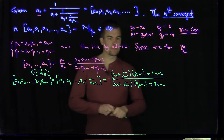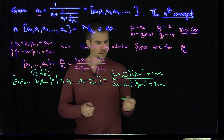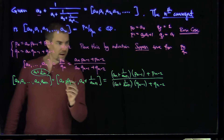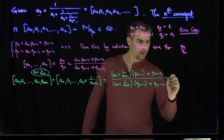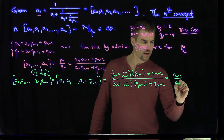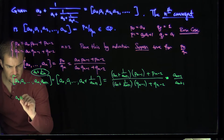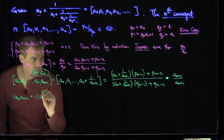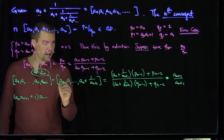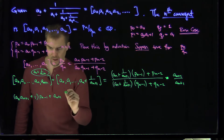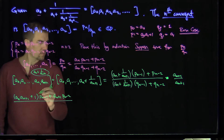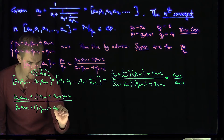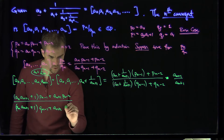What we'll do is multiply the top and bottom of this expression by an+1. Doing so, we get: an+1·(an·pn-1 plus pn-2) plus pn-1, all over an+1·(an·qn-1 plus qn-2) plus qn-1.